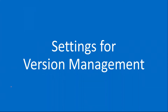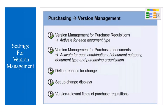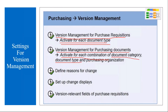For the version management settings, for purchase requisitions you need to activate at the document type level. Whereas for purchasing documents like purchase orders and request for quotation, you have to activate for each combination of document category, document type, and purchasing organization. I will show all these things in the system.